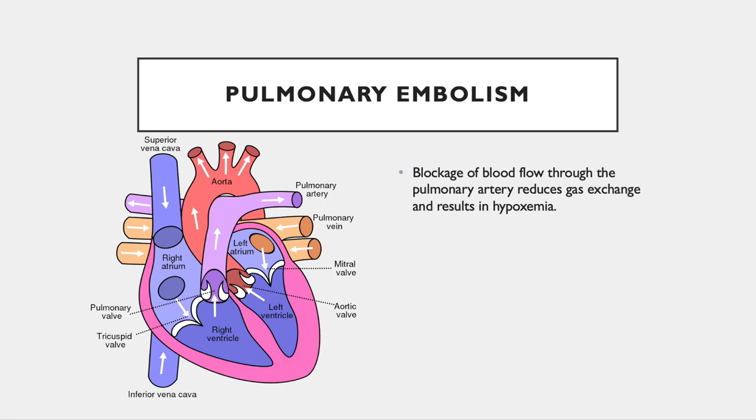A pulmonary embolism occurs from the process of entrance of solids, liquids, or air that enters the blood circulation and travels to the right side of the heart and lodges in the pulmonary artery. Therefore, it obstructs the pulmonary blood flow, which reduces gas exchange and results in hypoxemia. So the first sign of a respiratory emergency would be a drop in oxygen saturation, and if not acted on quickly, it can result in death.